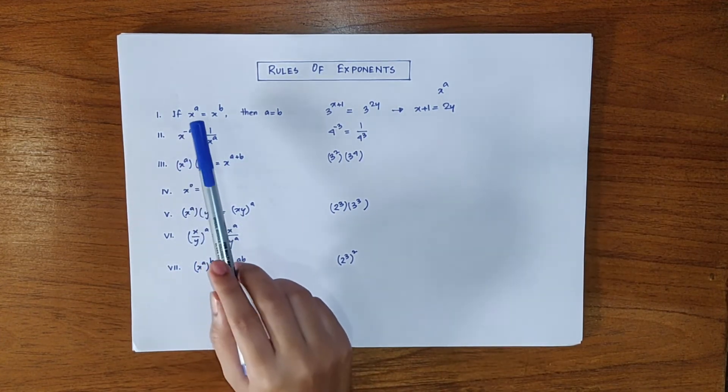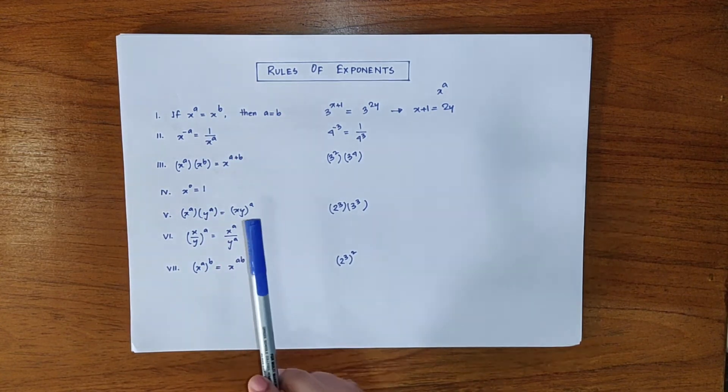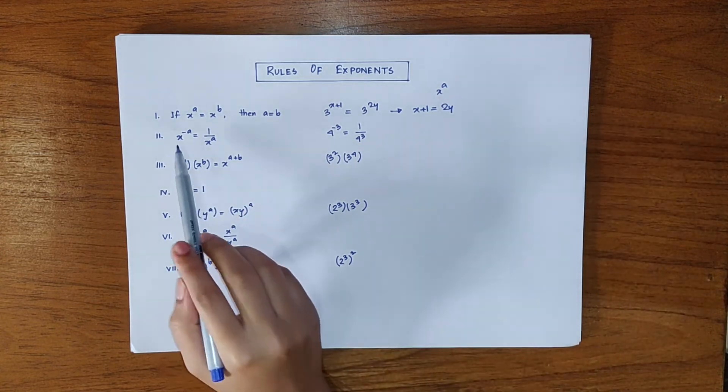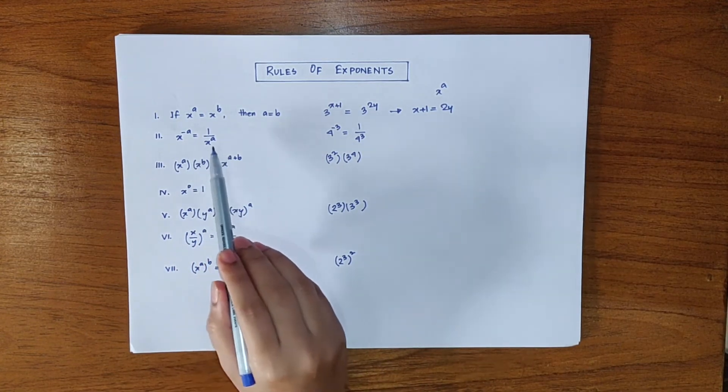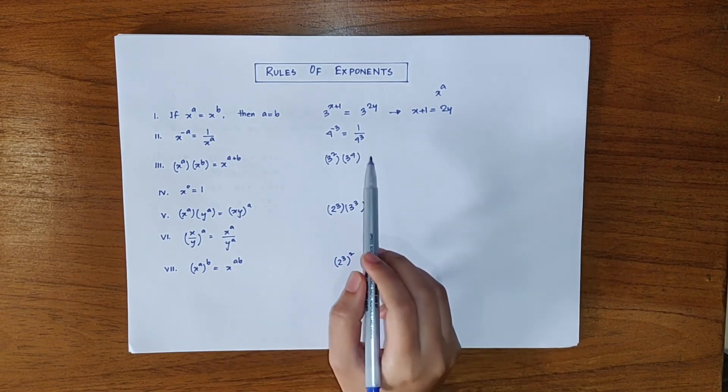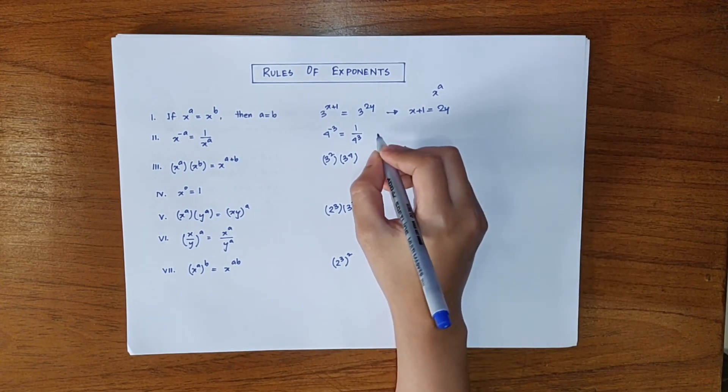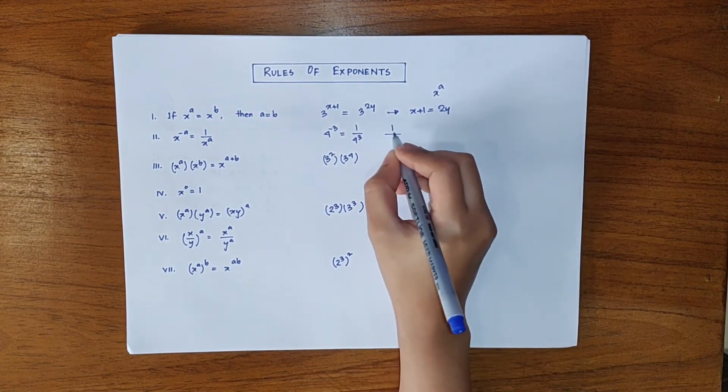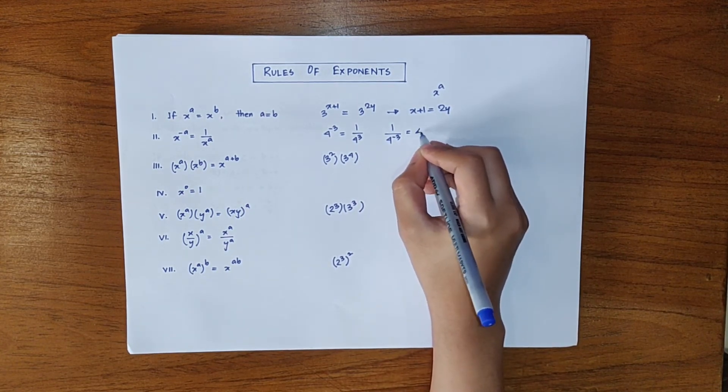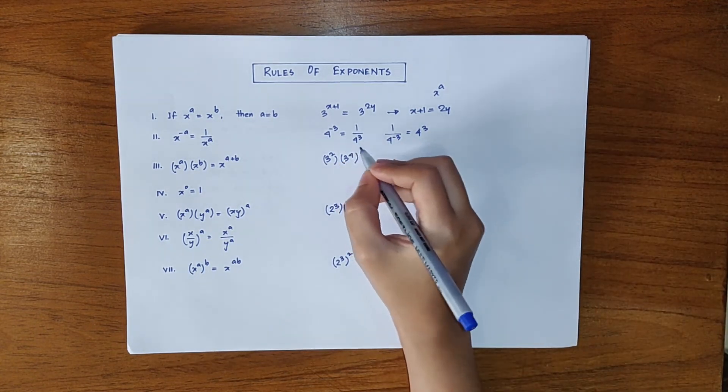In this case x can be all positive numbers except 1 and a and b are integers. Now x to the power minus a can be written as 1 by x to the power a. For example 4 to the power minus 3 can be written as 1 by 4 cube. We can also write 1 by 4 to the power minus 3 is equal to 4 cube by interchanging these two.